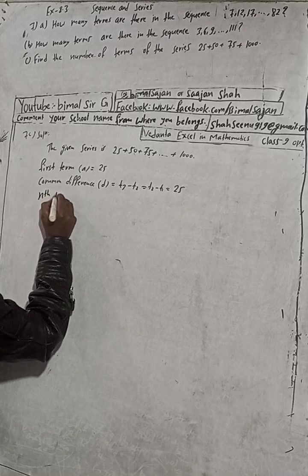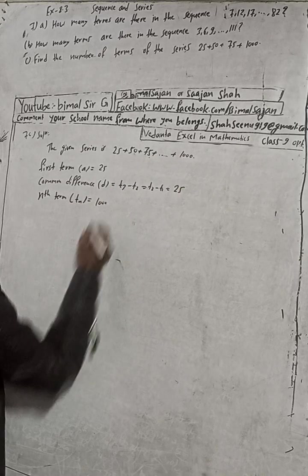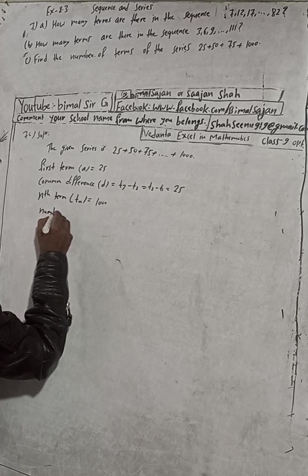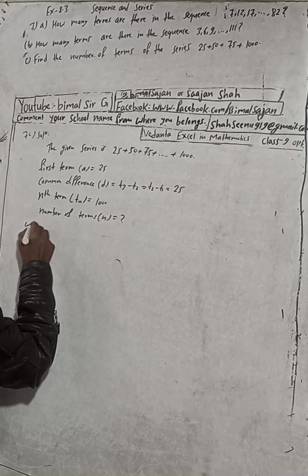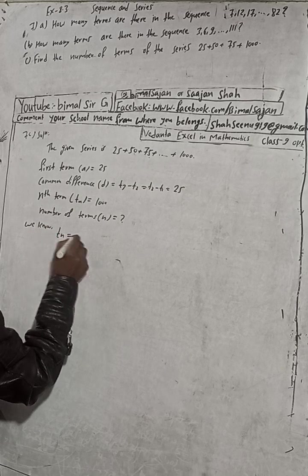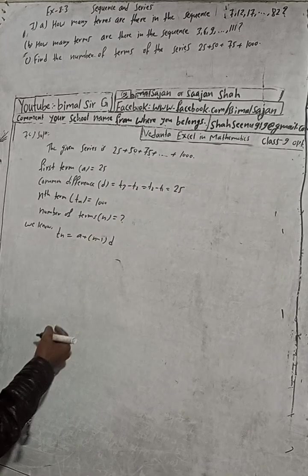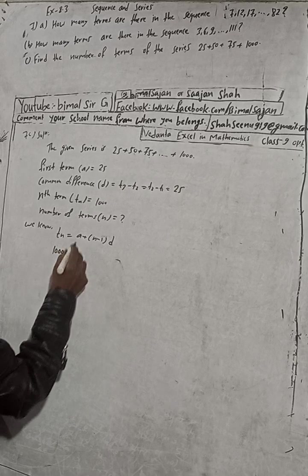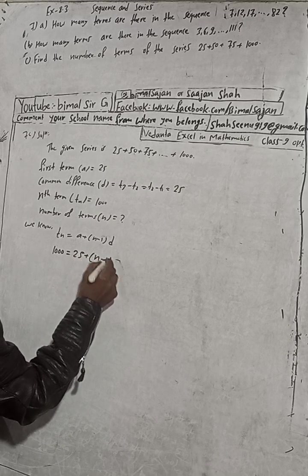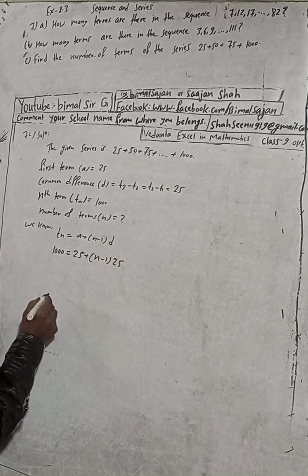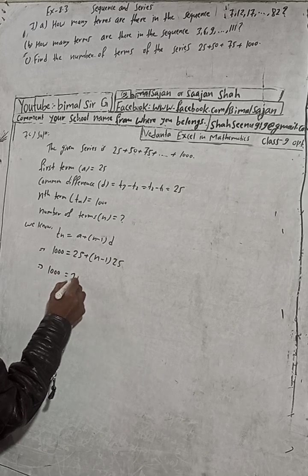Now the last term, or nth term, tn, last term is here 1000. We have to find the number of terms. Therefore, number of terms, we have tn equals a plus n minus 1 into d. Tn, last term, is 1000. So 1000 is equal to a, a value is 25 plus n minus 1, d value is 25. This implies 1000 is equal to 25 plus 25n minus 25.